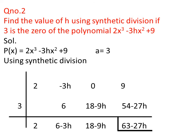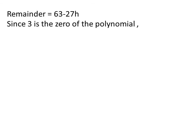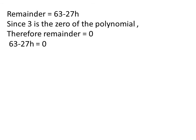Adding 0 and 18 - 9h gives 18 - 9h. The product of (18 - 9h) and 3 is 54 - 27h, written under 9. Adding 9 and 54 - 27h gives 63 - 27h. Since the last term 63 - 27h is the remainder and 3 is the zero of the polynomial, the remainder equals 0. So we write 63 - 27h = 0, which gives 63 = 27h, and dividing both sides by 27 gives h = 63/27, which reduces to h = 7/3.